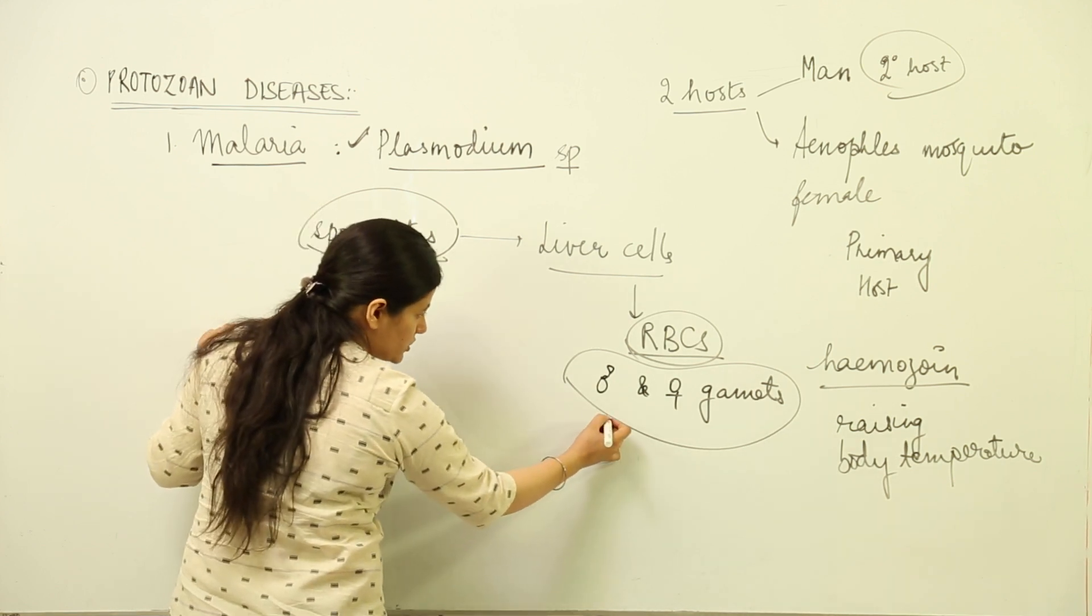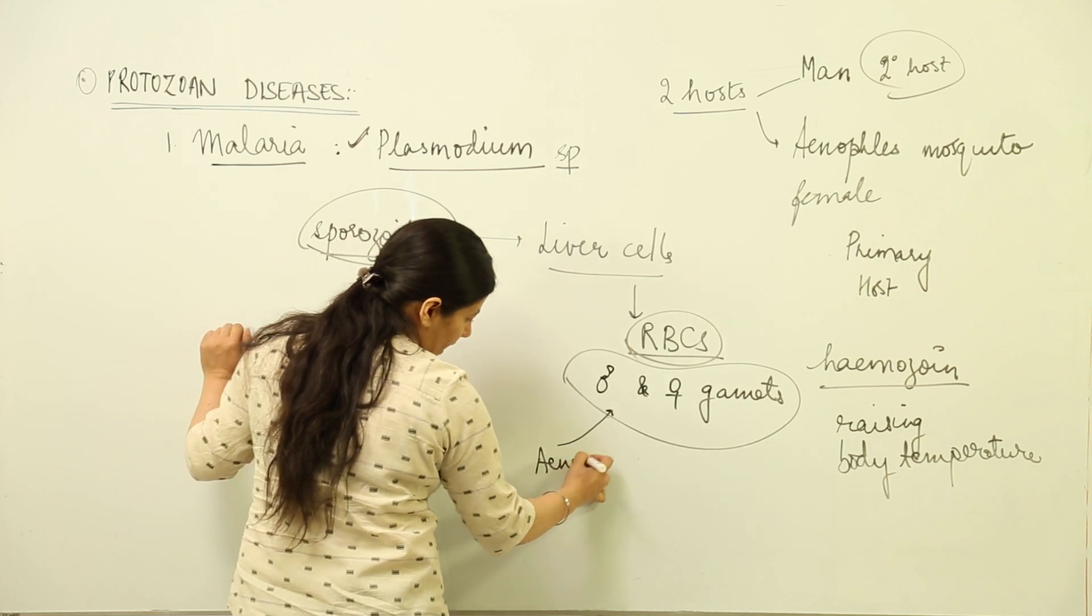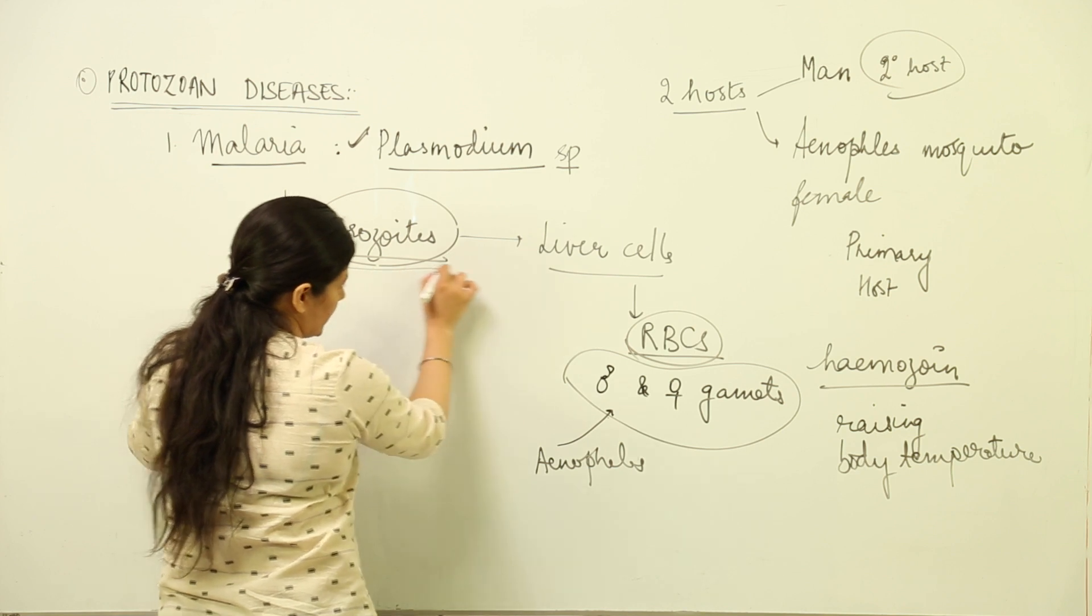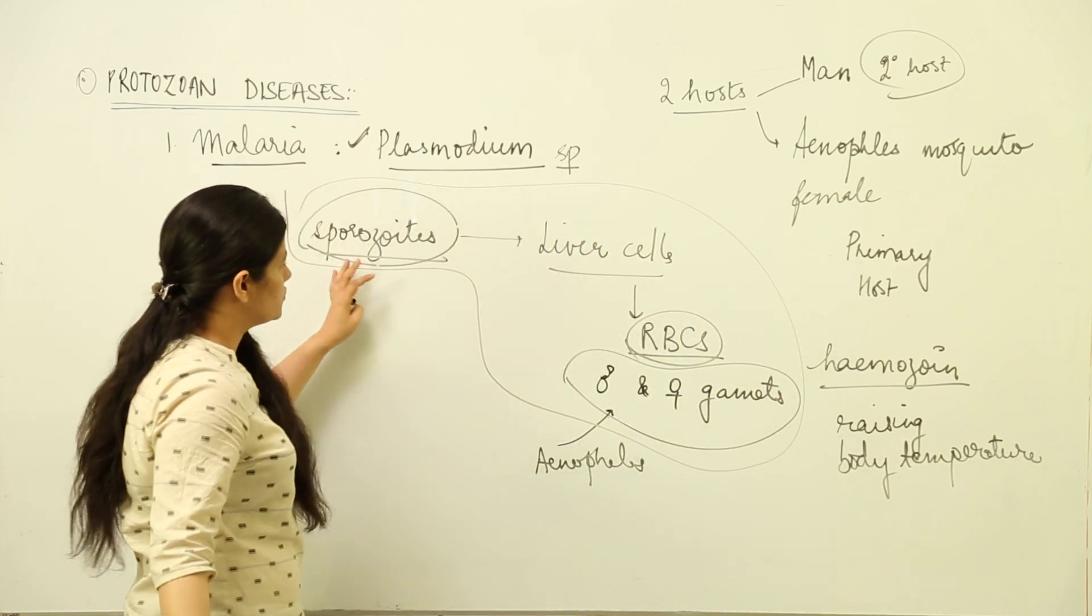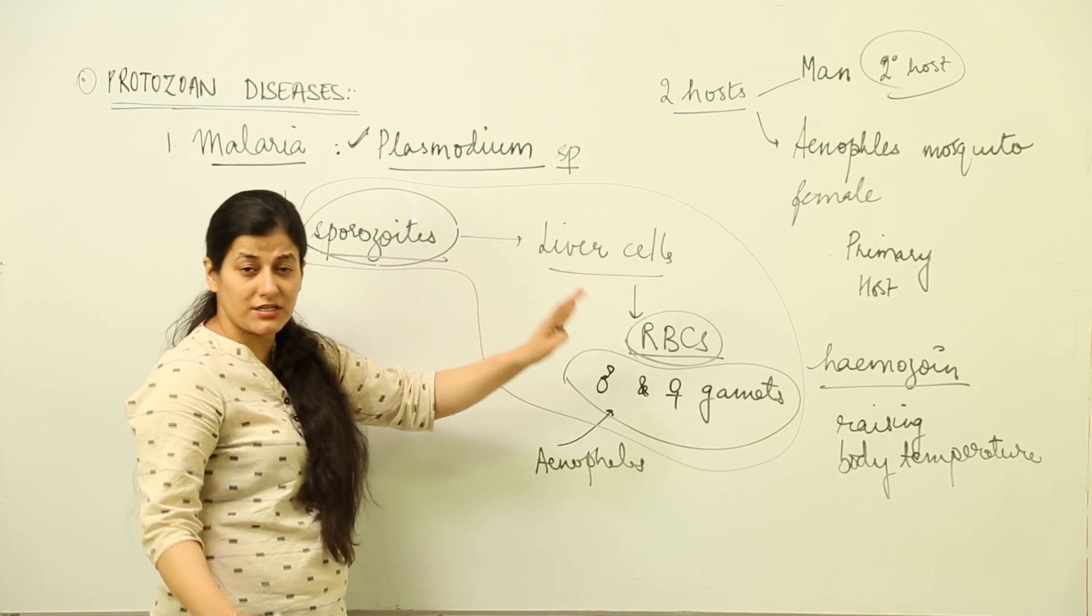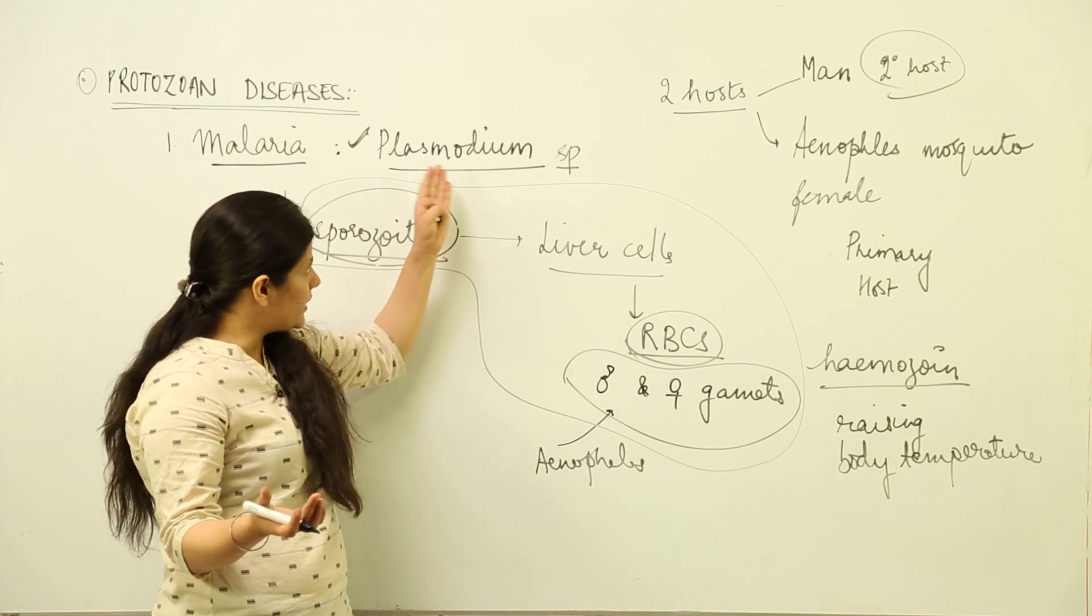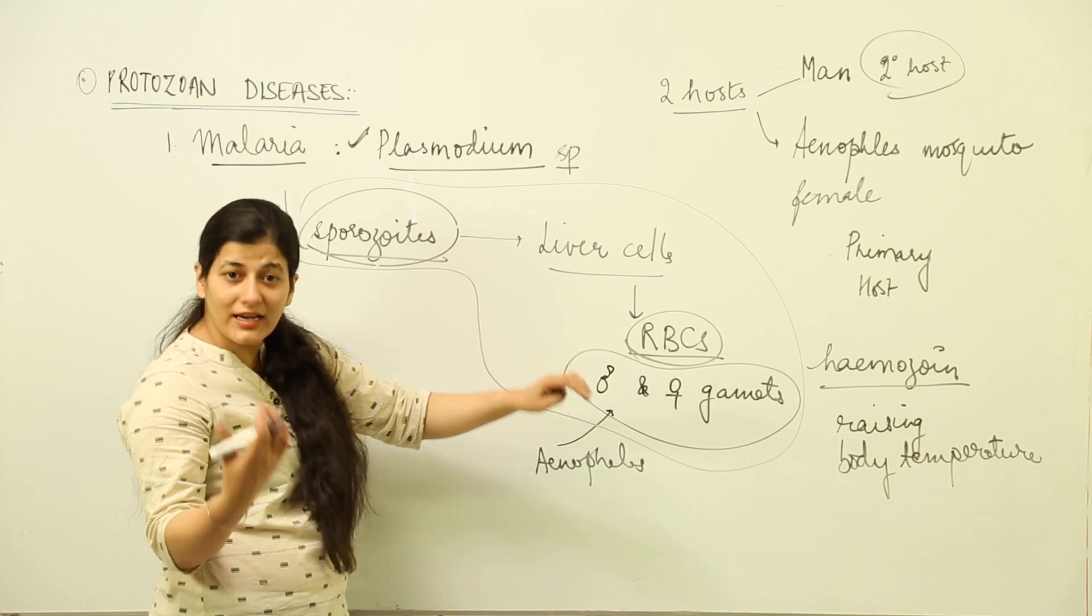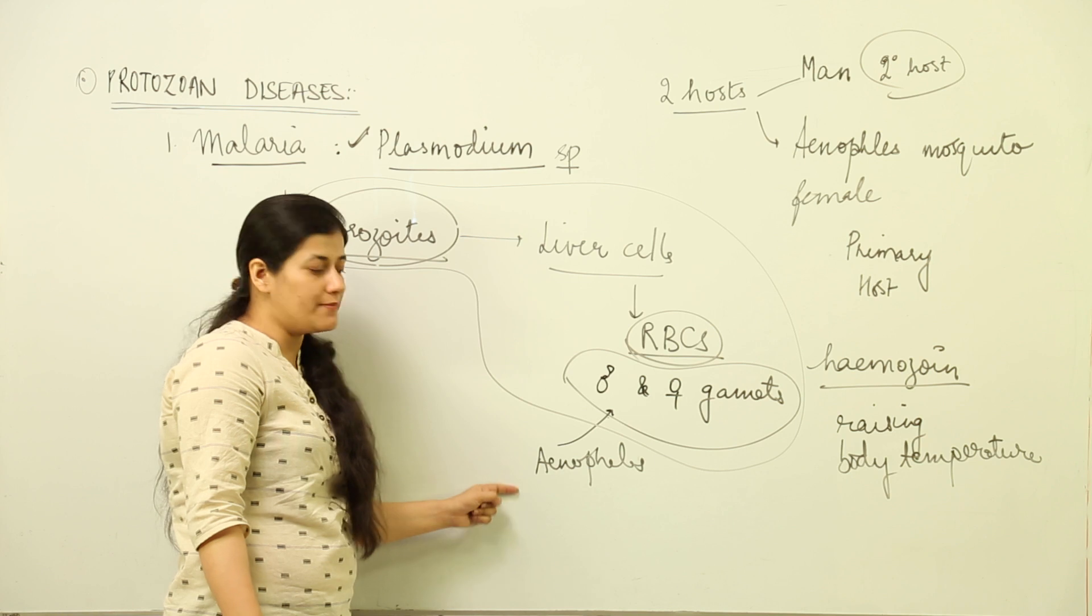These male and female gametes are in the RBCs, in the bloodstream. An uninfected Anopheles will come and feed on the blood. This part takes place inside the human being: the sporozoites infect liver cells, from liver cells they go to RBCs, and RBCs produce many Plasmodium stages and form male and female gametes. Then one uninfected Anopheles comes and bites the human being.